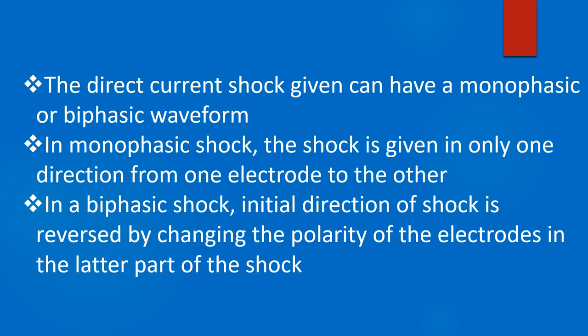The direct current shock given can have a monophasic or biphasic waveform. In a monophasic shock, the shock is given in only one direction from one electrode to the other. In a biphasic shock, the initial directional shock is reversed by changing the polarity of the electrodes in the latter part of the shock.